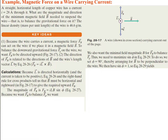To balance the downward gravitational force F_G, we can arrange the magnetic force F_B to point upward. The direction of F_B is related to the directions of B and the wire's length L. Because L is directed horizontally and the current is coming out of the page, the right-hand rule tells us that B must be horizontal and rightward. If we point our fingers up out of the page and curl them toward the right, our thumb points upward — that's the direction of the magnetic force, which balances gravity.